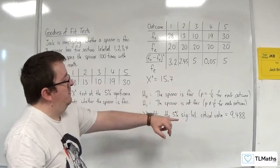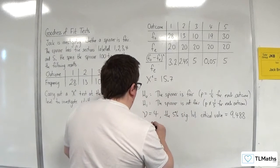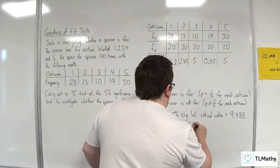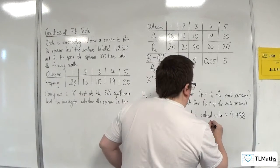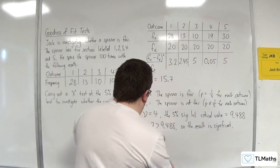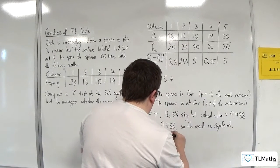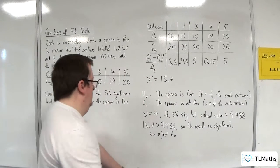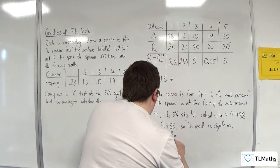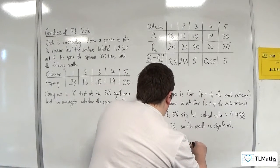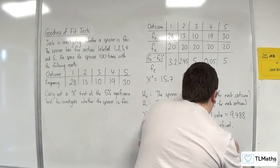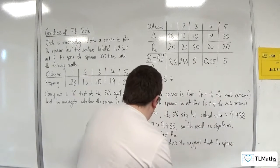Now our value is clearly greater than that. So 15.7 is greater than 9.488. The result is significant. There is evidence to suggest that the spinner is not fair.